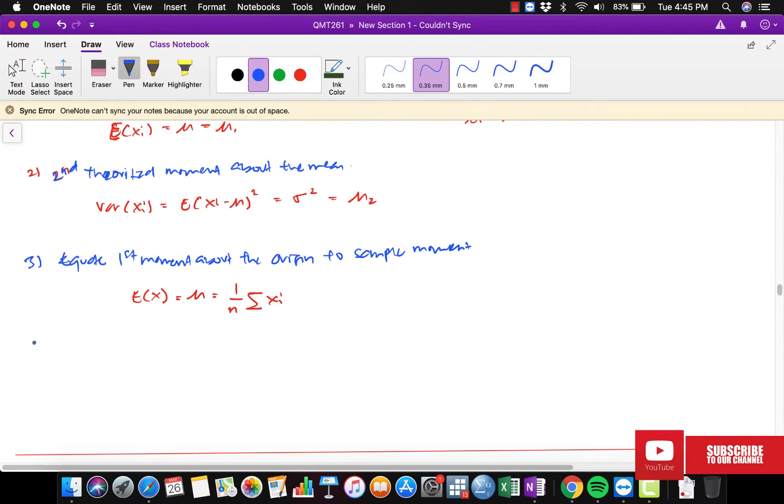And the fourth step is we're going to equate the second moment about the mean to the sample second moment. So this one should be Var(Xi) equal to sigma squared equal to 1 over n summation of (Xi minus X bar) squared from 1 until n.